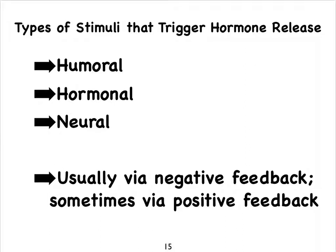There are three types of stimuli that can trigger the release of hormones. We refer to these types of stimuli as either humoral, hormonal, and neural. Usually this is all regulated by means of a negative feedback mechanism, but it can also happen that we see a positive feedback mechanism.